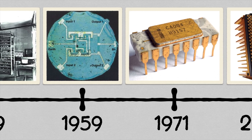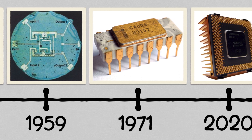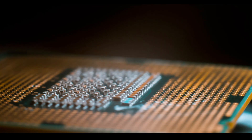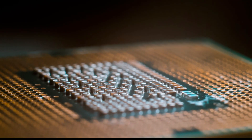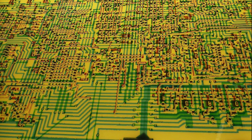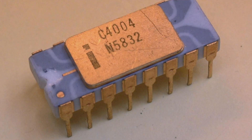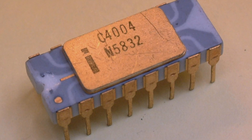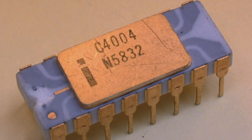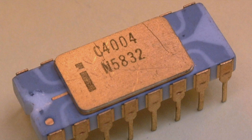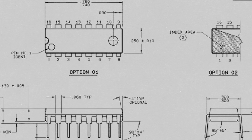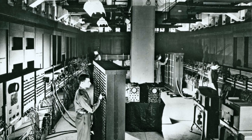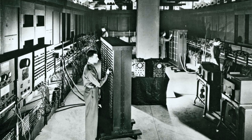In 1971, as manufacturing technology improved, Intel upped the game again by including on a single silicon chip not thousands of transistors, but thousands of integrated circuits. It is the first ever true microprocessor, the Intel 4004. Packaged on a 2cm silicon chip, it had the same computing power as the room-sized ENIAC.